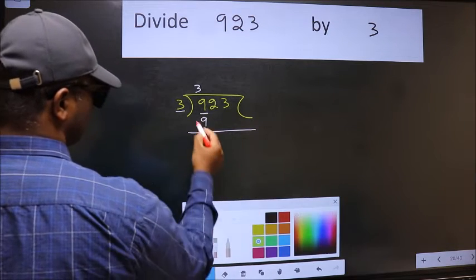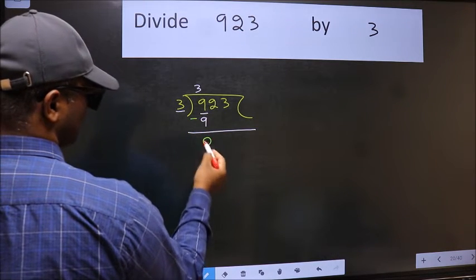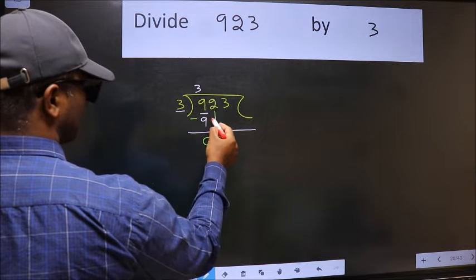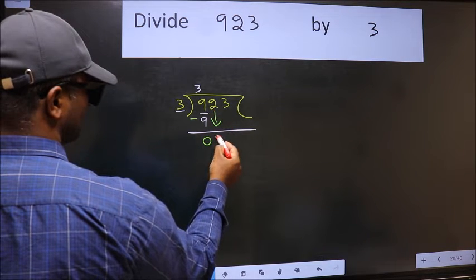Now we should subtract. We get 0. After this, bring down the next number. So bring 2 down.